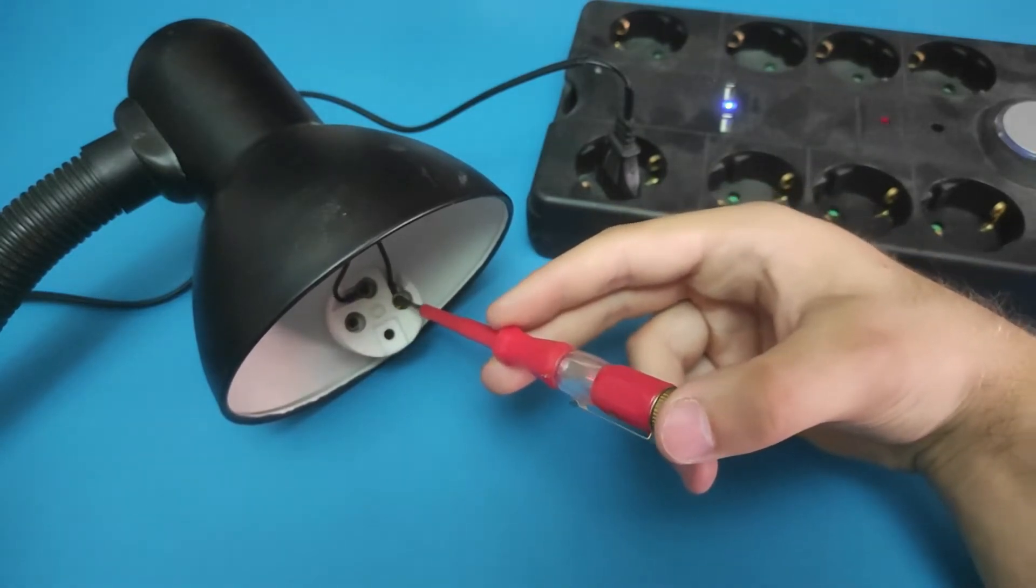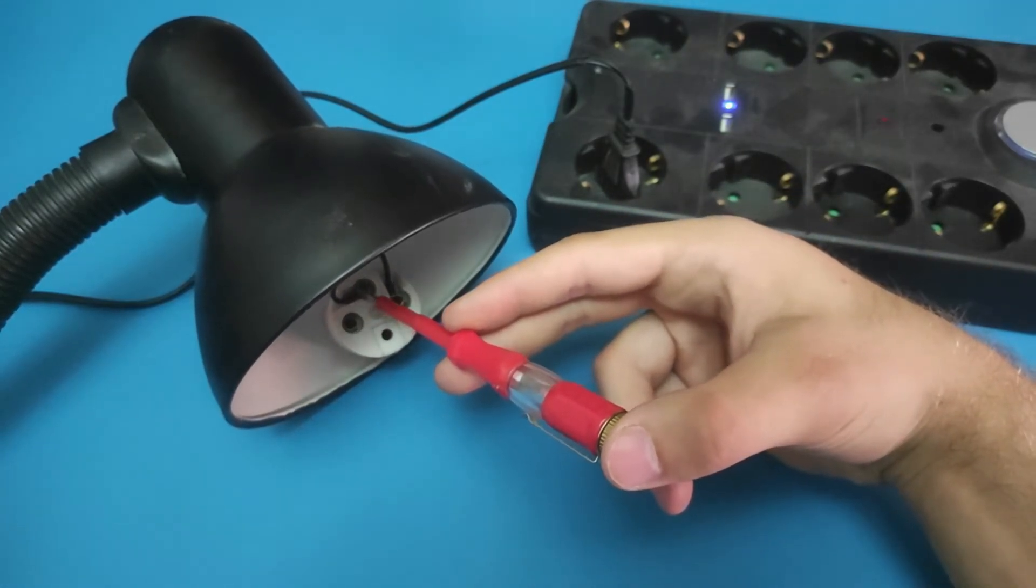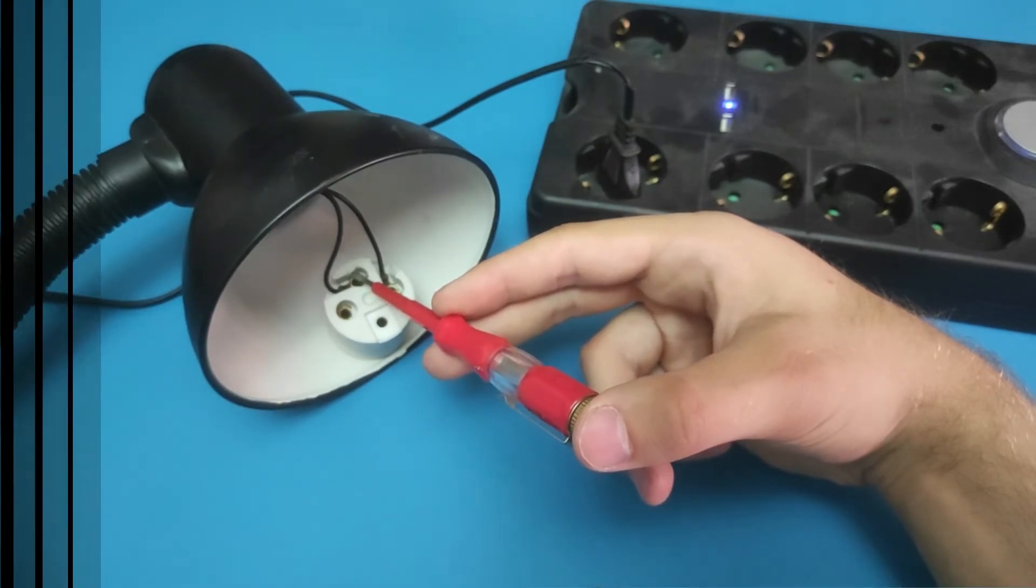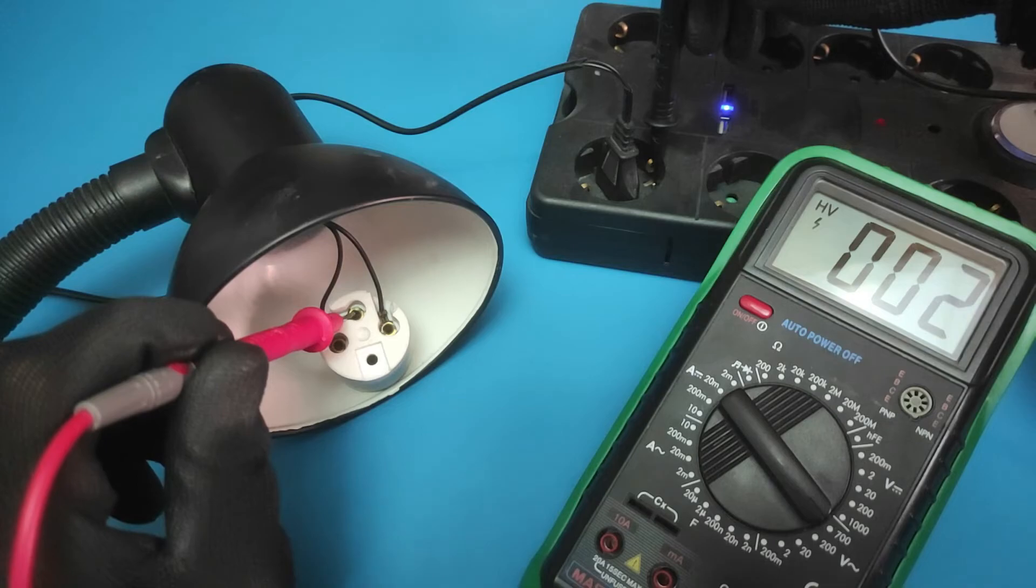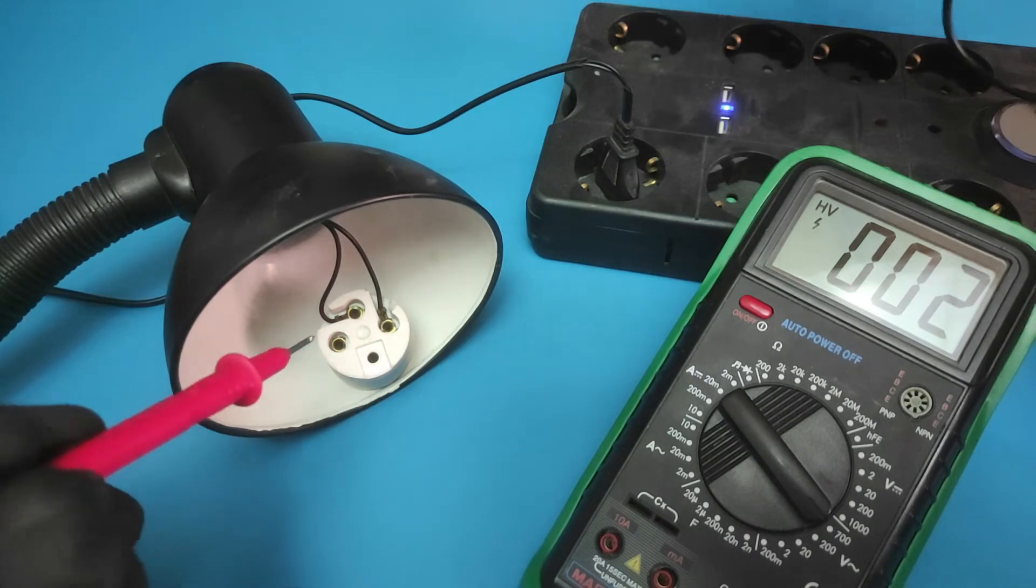If the wire you are connecting with a voltage tester does not light up, you have located the neutral wire. If you connect the ground and one end of the wire to the multimeter and receive a reading that is close to zero, you have successfully identified the neutral wire.